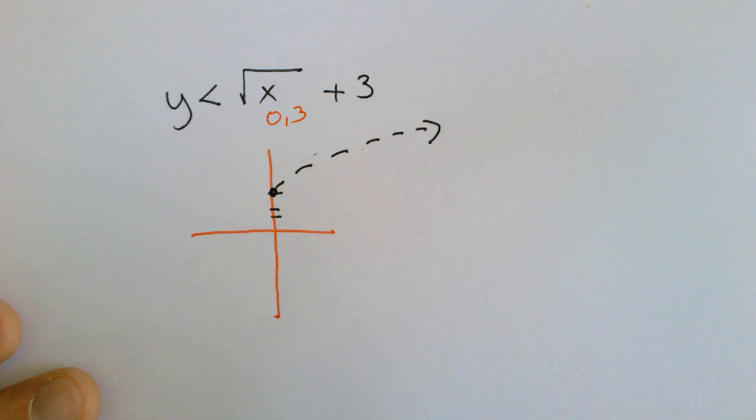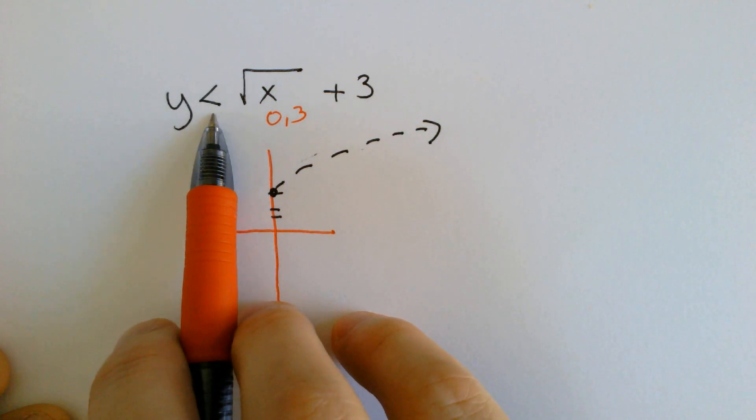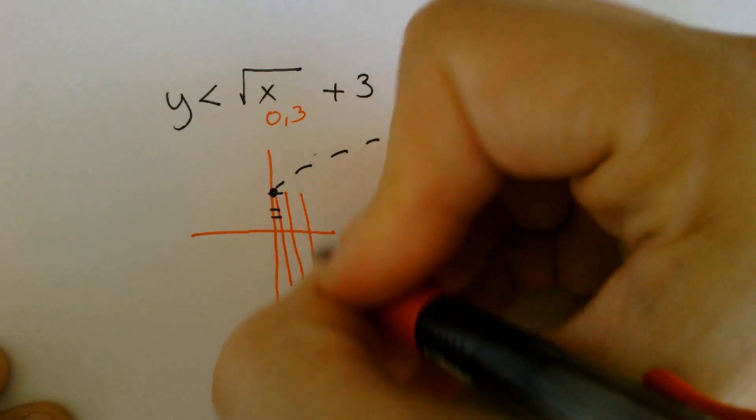From here, you have to ask yourself, this is less than because it points to the left. If it points to the left and is less than, we need to shade down.